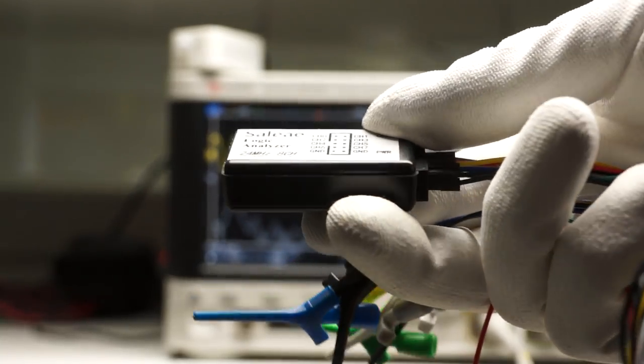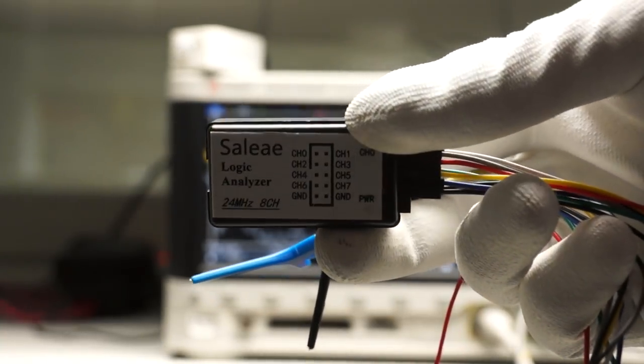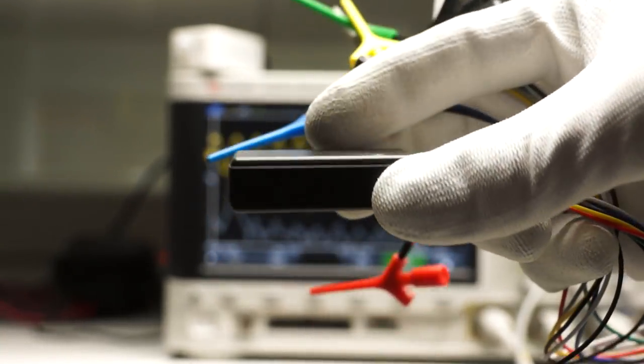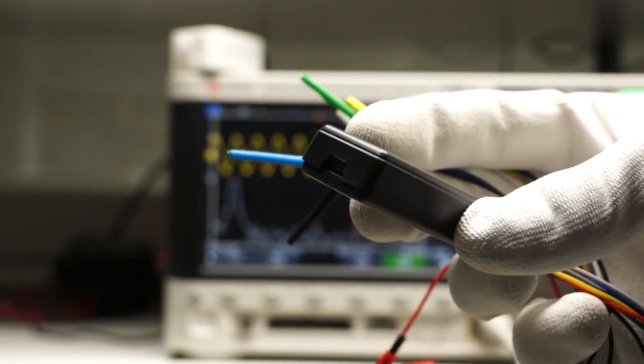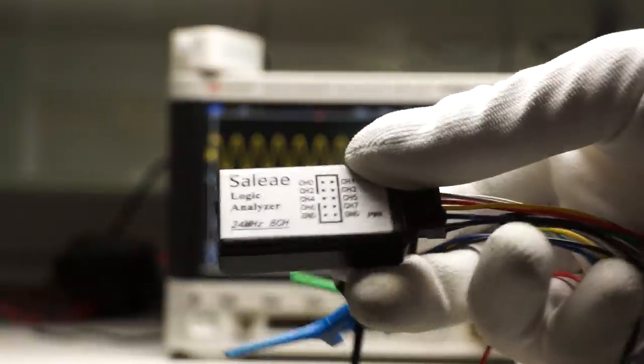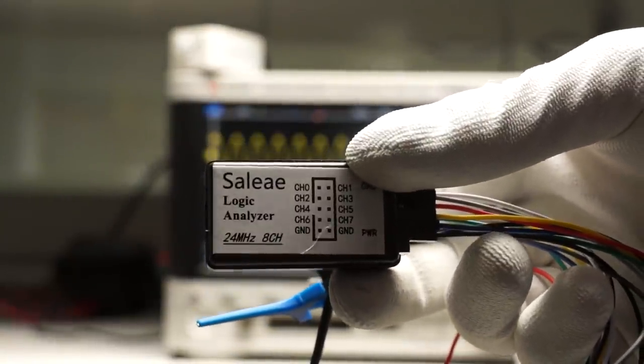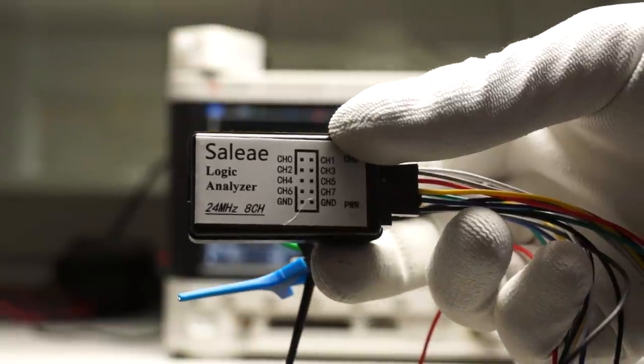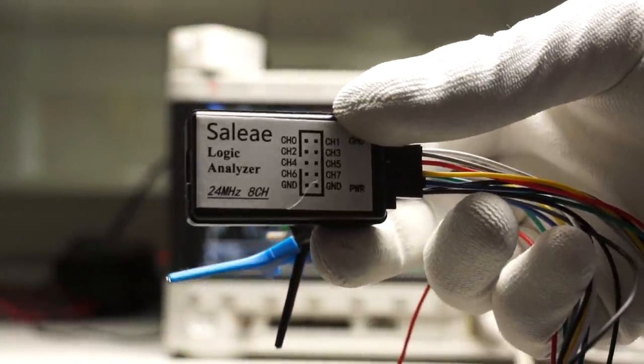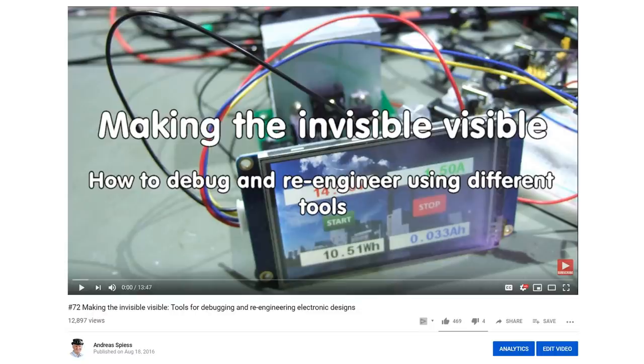I strongly recommend buying one of those small logic analyzers, especially if you do not have an oscilloscope. This device is invaluable. For less than $10 you get a tool which displays and decodes all sorts of digital signals. If you have problems with your I2C bus, your serial connection or just a conventional logic signal, this tool helps. You can watch video number 72 if you want to know how it is used.